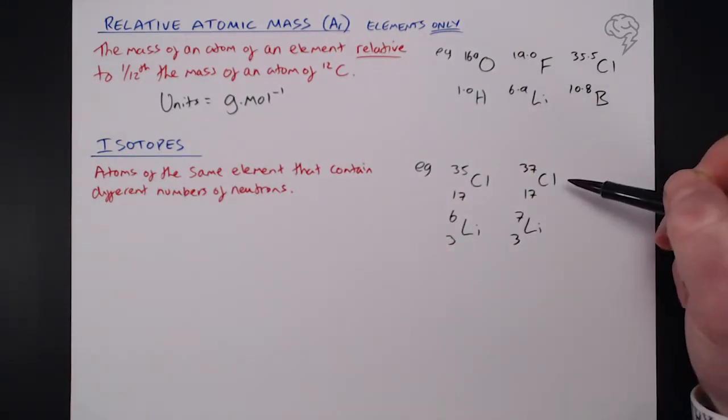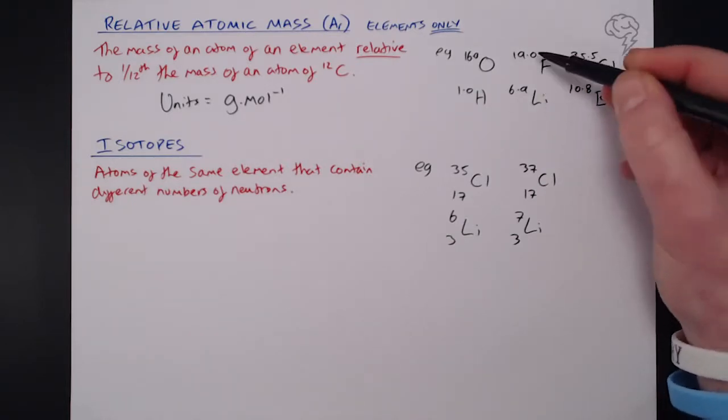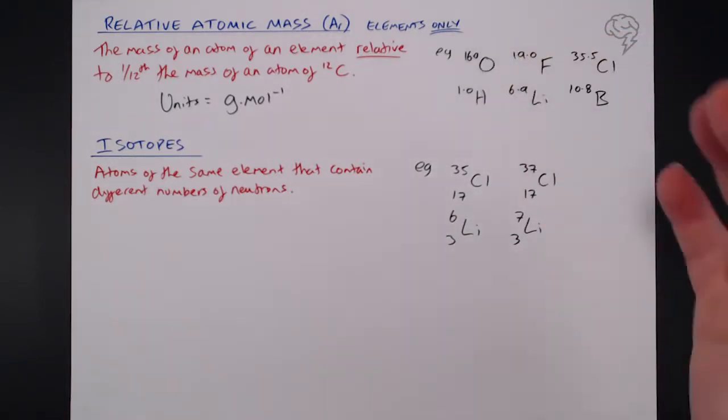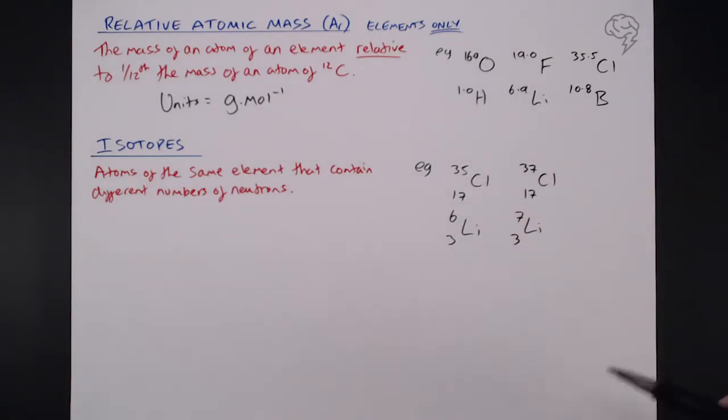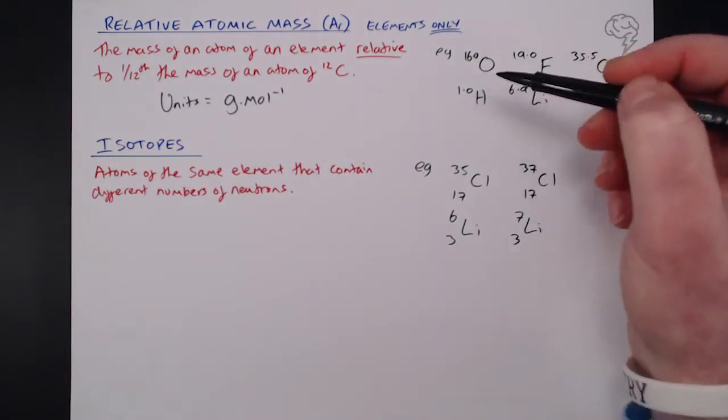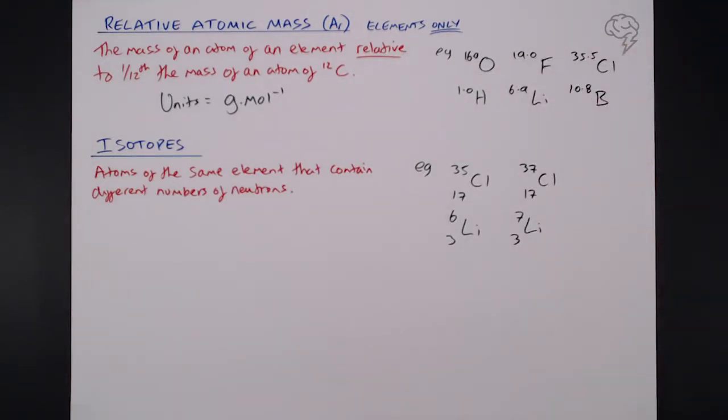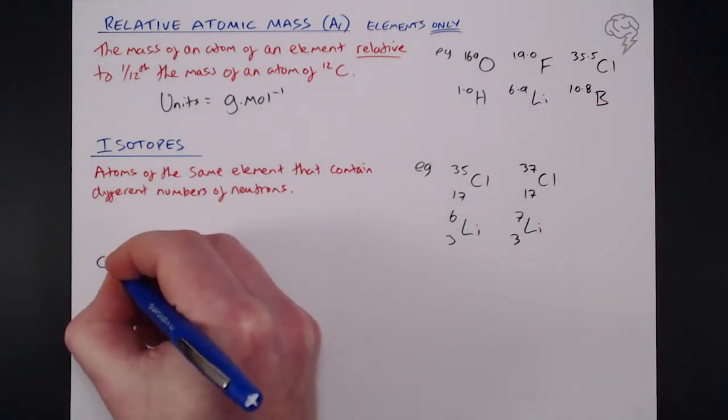Now, if you remember what I just said, that these numbers here, these relative atomic masses that you see in your periodic table are averages of the different isotopes of those elements. So we need to know how to calculate the relative atomic mass of an element. And that is pretty straightforward.